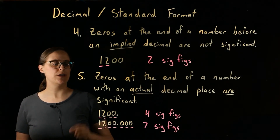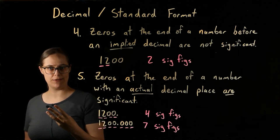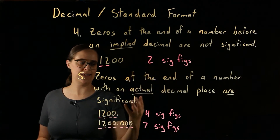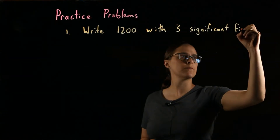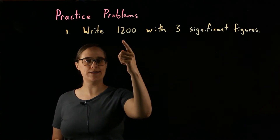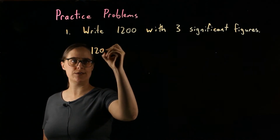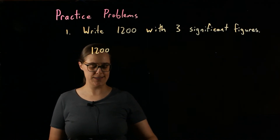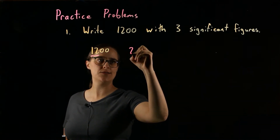Now here's a challenge: figure out how to write the number 1,200 with three significant figures. Without a decimal point at the end it has two; with a decimal point at the end it has four. If I write 1,200 with no decimal point, those trailing zeros are not significant — only the 1 and the 2 are significant, giving two significant figures.